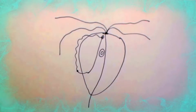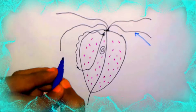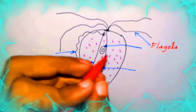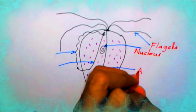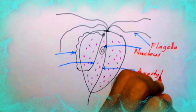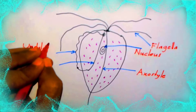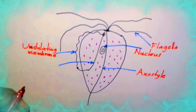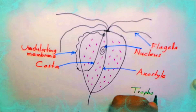Now you can see I am drawing a Trichomonas vaginalis trophozoite, labeling the flagella, nucleus, and axostyle. The undulating membrane and the costa are also indicated in the diagram.